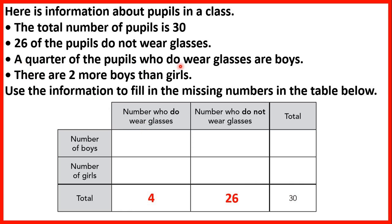A quarter of the pupils who wear glasses are boys. A quarter of 4 is 1, so 1 boy wears glasses, meaning 3 girls wear glasses. There are 2 more boys than girls in the class of 30. Half of 30 is 15; adding and subtracting half the difference — which is 1 — gives us 16 boys and 14 girls, because 16 plus 14 equals 30 and 16 is 2 more than 14.